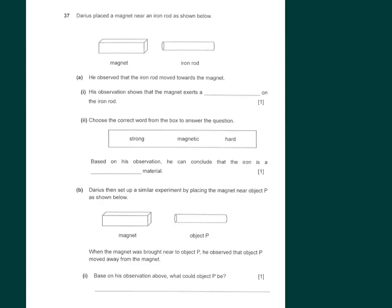Question 37: Darius placed a magnet near an iron rod. The iron rod is a magnetic material, so there will be a force of attraction. He observed that the iron rod moved towards the magnet. His observation shows that the magnet exerts a force of attraction — or attractive force. Writing just 'attraction' is also acceptable.